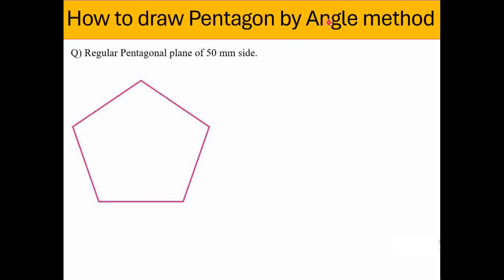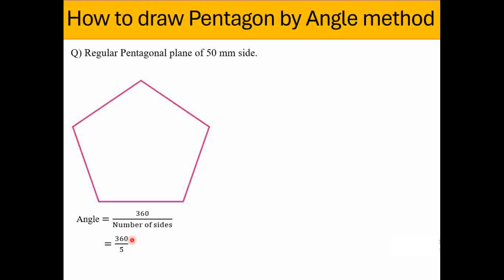As per the name of the method — angle method — we have to use a formula to find out the angle of a particular polygon: angle = 360 divided by number of sides. This is applicable for other polygons also. Since we are drawing a pentagonal plane, the number of sides is 5, so 360 divided by 5 gives us 72 degrees.